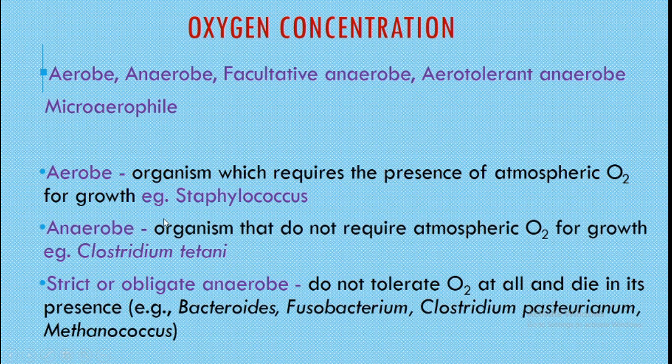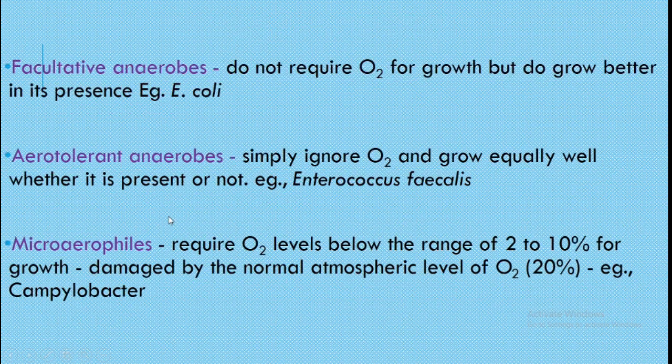Anaerobes are of two types: strict or obligate anaerobes, which do not tolerate oxygen and can be killed by it. Examples include Bacteroides, Fusobacterium, Clostridium, and Methanococcus. Then there are facultative anaerobes which do not require oxygen for growth but may grow better in its presence. Example: E. coli.